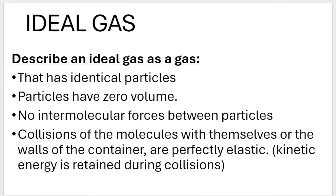Here's another look at real gases versus ideal gases. For ideal gases, the particles have no volume, but real gas particles do have a volume. For ideal gases, collisions are assumed to be elastic, but in real gases there is energy loss in collisions. For ideal gases there are no intermolecular forces, but real gases definitely do have intermolecular forces — although they are weak, they are present.